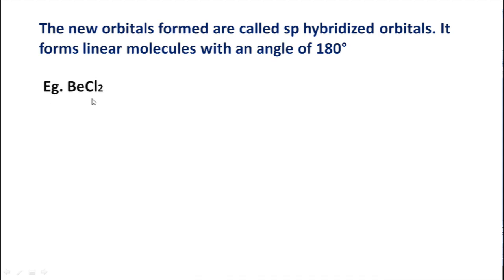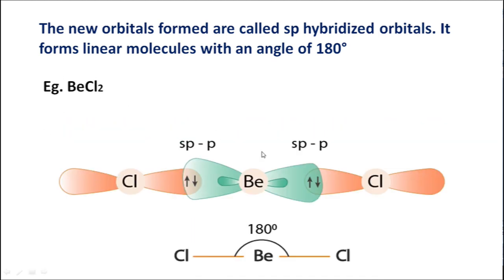As an example, consider the beryllium atom. Here, beryllium is bonded with two chlorine atoms. The hybridization is SP hybridization, and the bond angle between the two bonds around beryllium is 180 degrees.